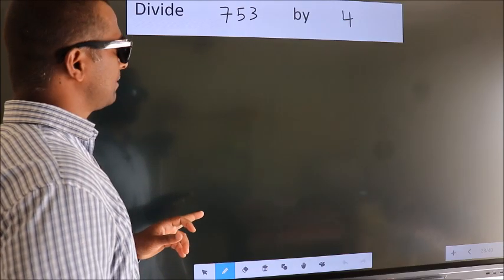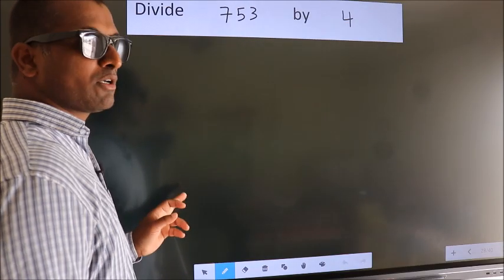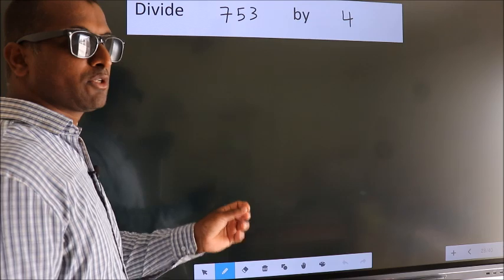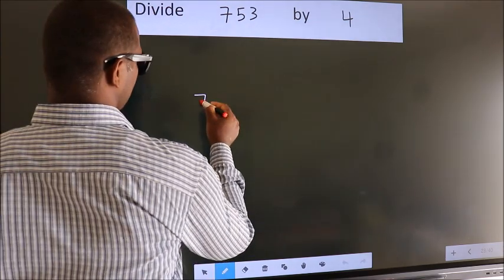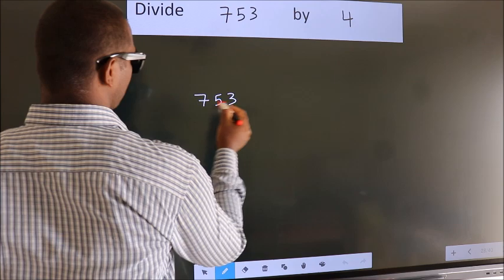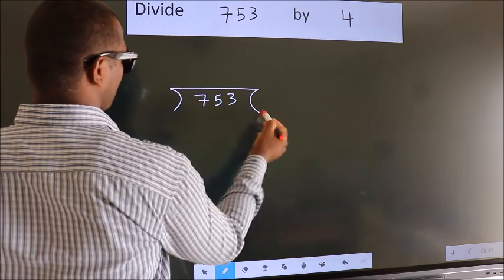Divide 753 by 4. To do this division we should frame it in this way. 753 here, 4 here.